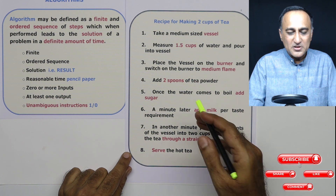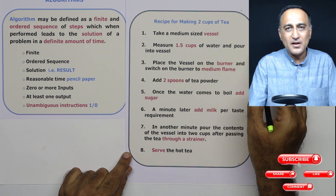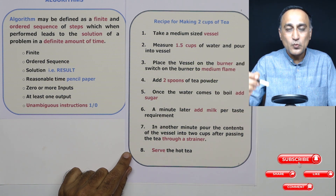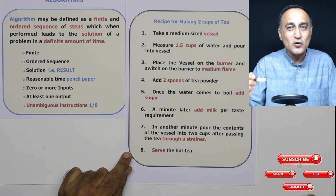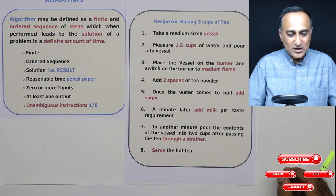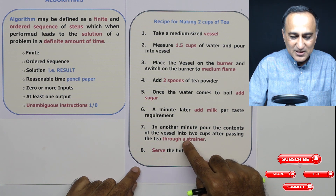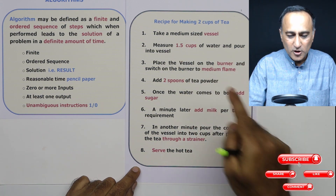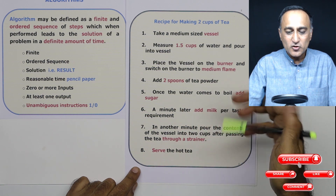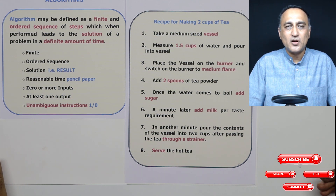Suppose I just give one instruction: take a vessel with tea powder, sugar, milk, and make tea. That is not a clear instruction, because in an algorithm you require the steps to be mentioned with absolute clarity, assuming it's a robot that is going to implement your instructions. The keywords are: finite steps, a definite sequence. For example, if I take step seven and make it step two — will it work? Absolutely not, because I still have not poured water, turned on the burner, added tea powder, or added sugar. So you cannot make tea that way. If you have understood this, nothing in learning the algorithmic approach to solve a problem will be difficult.